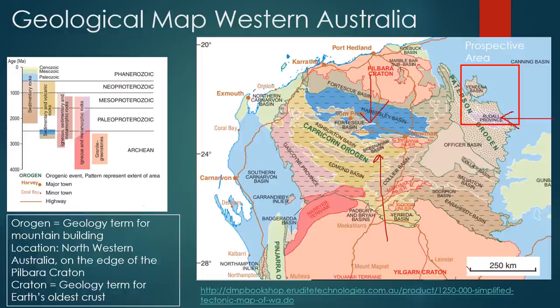We have rock types ranging in Archaean age all the way through to Phanerozoic, as illustrated on the left. Predominantly, the rock ages within the Patterson Orogen are from the Paleo-Proterozoic all the way up to the Phanerozoic, where in the Neo-Proterozoic this particular region is where we host our gold mineralisation.